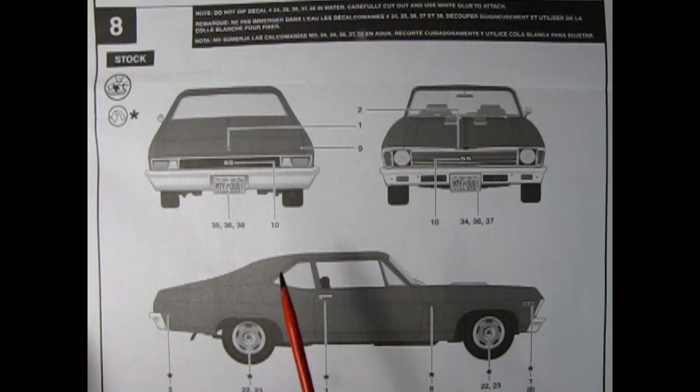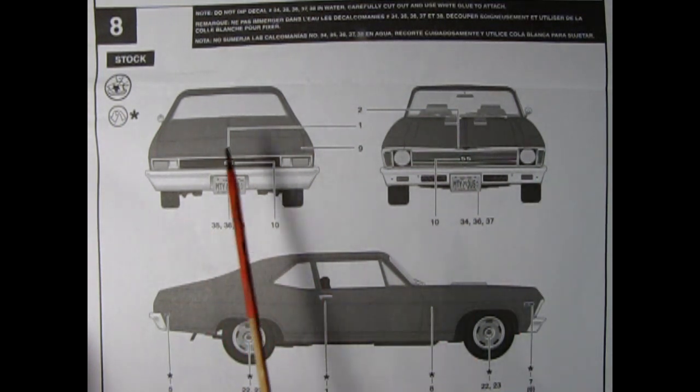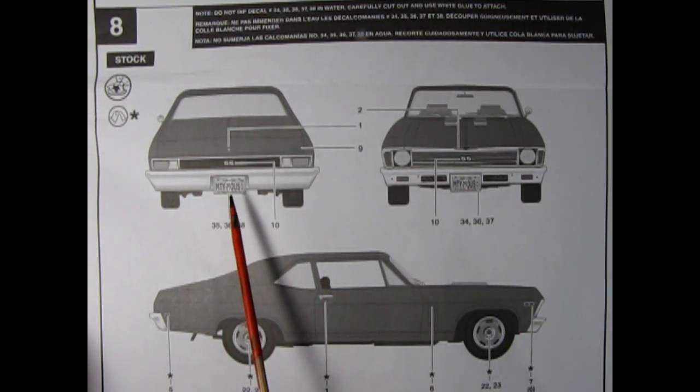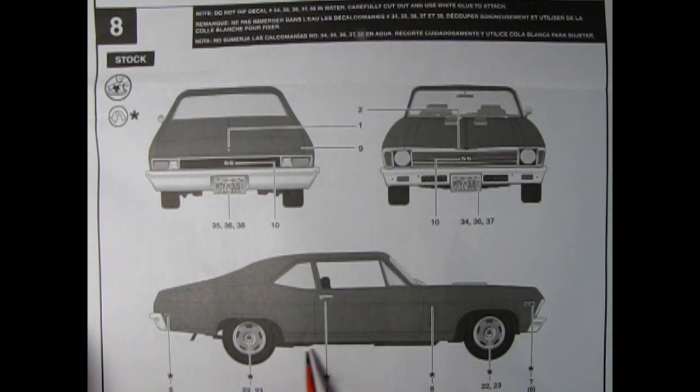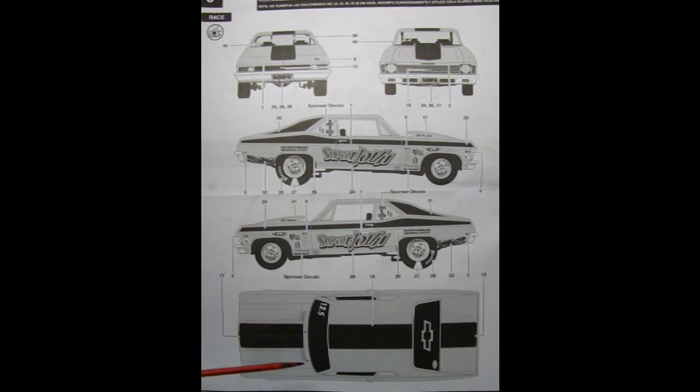Panel 8 shows our decal application for the stock version of the Nova including our license plate, our SS emblems, and all the little side bits. Here's the decal application if you want to build the racing version. We've got our long chubby stripe here with the bow tie for the window. We also have the supernova decal on the side and all the wheel decals and everything else to make this model look amazing.